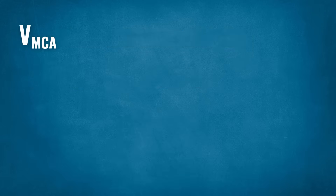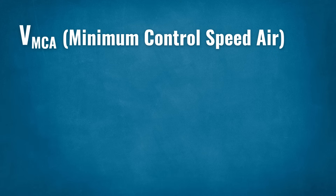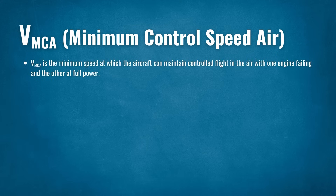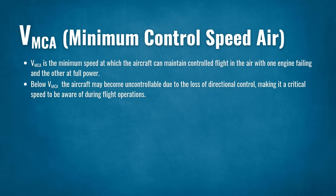VMCA, or Minimum Control Speed in the Air, is the minimum speed at which the aircraft can maintain controlled flight in the air with one engine failing and the other at full power. Below VMCA, the aircraft may become uncontrollable due to the loss of directional control, making it a critical speed to be aware of during flight operations.